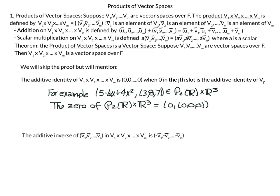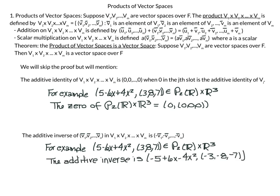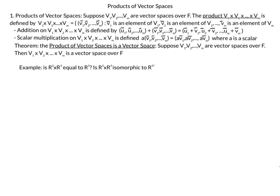Bringing back our last example of P2 cross R3: the zero vector is the zero vector of P2 (the polynomial 0) paired with the zero of R3, which is (0, 0, 0). The additive inverse of an m-tuple in the cross product is the negative of each vector. So if we have the polynomial 5 minus 6x plus 4x squared paired with (3, 8, 7), the additive inverse is the polynomial negative 5 plus 6x minus 4x squared paired with (negative 3, negative 8, negative 7).